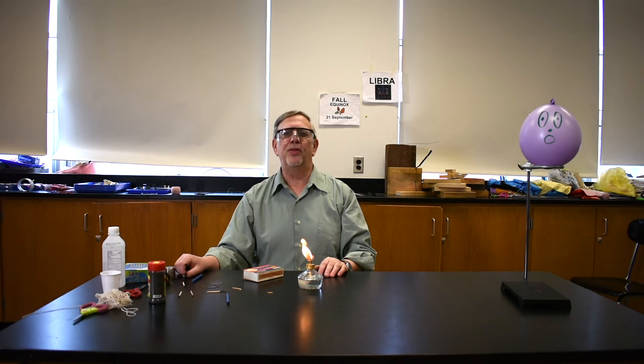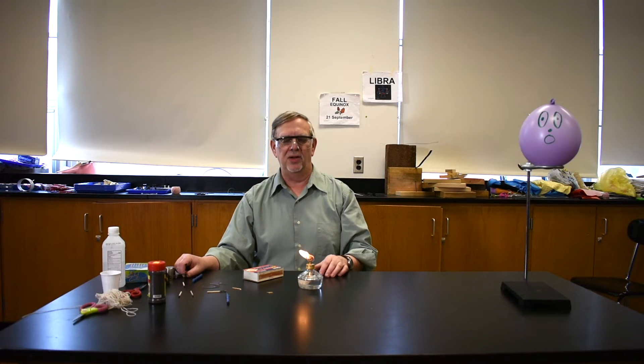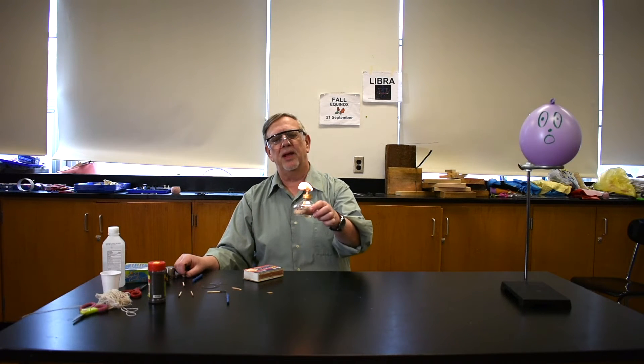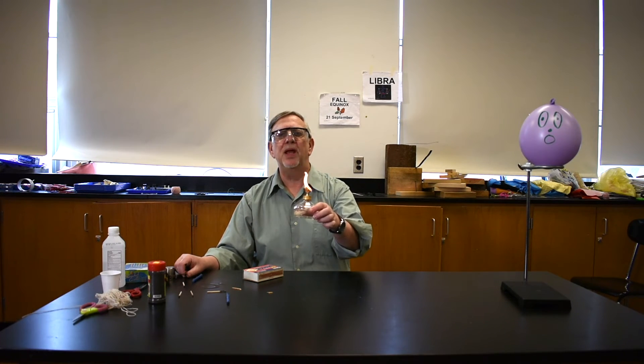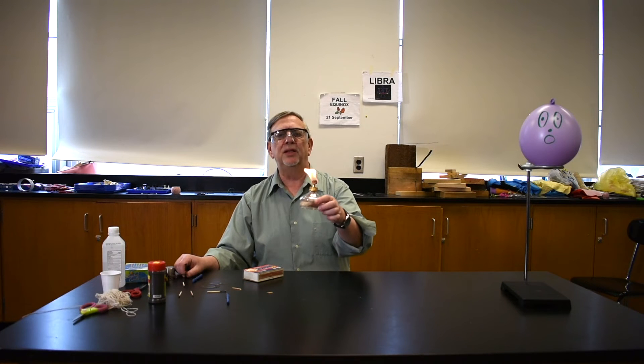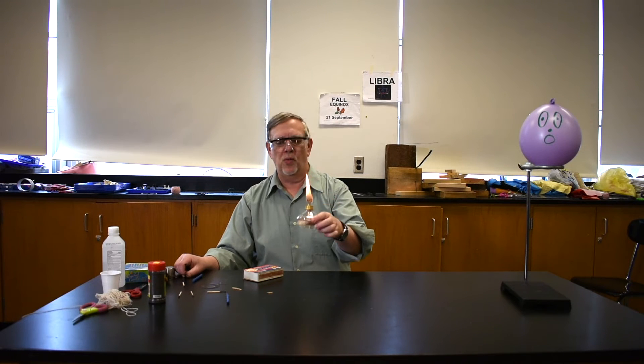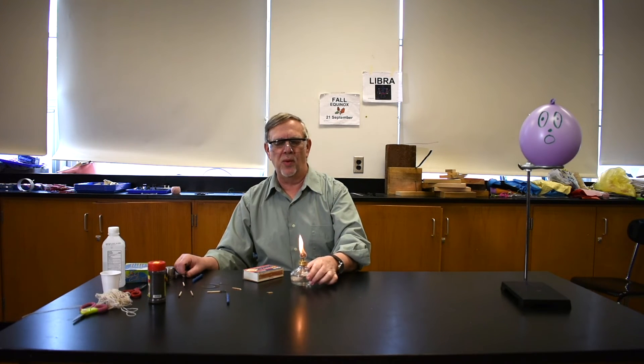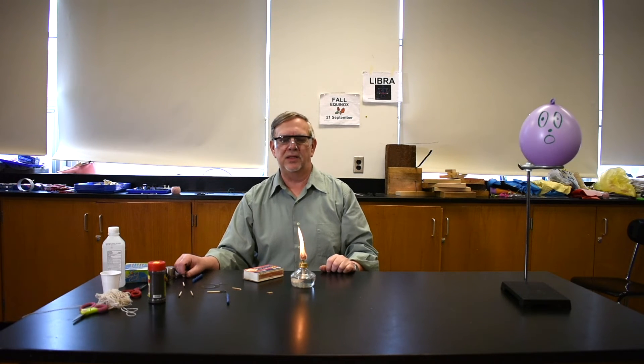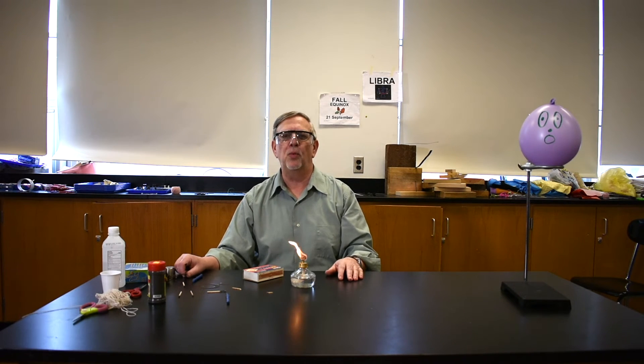And now we come to our third and last experiment. For this experiment I am using not a candle but an alcohol lamp. An alcohol lamp is a piece of equipment that is used in high school. It is a glass bowl filled with rubbing alcohol and rubbing alcohol is quite flammable. There is a cotton wick and this alcohol flame is much much hotter than a candle flame is.